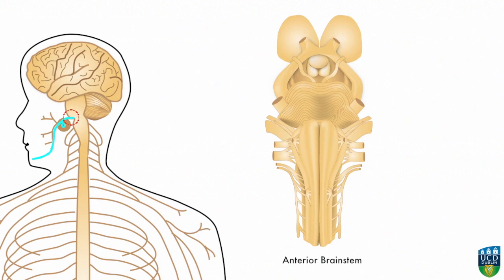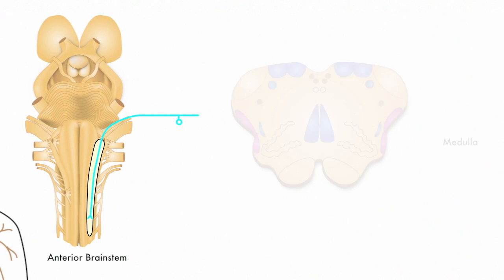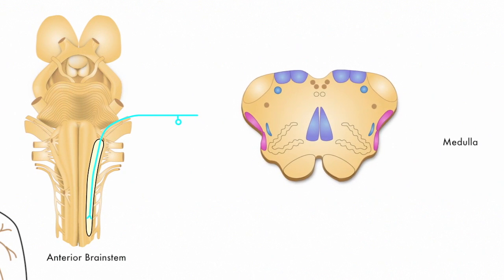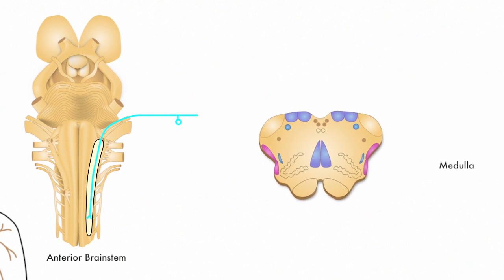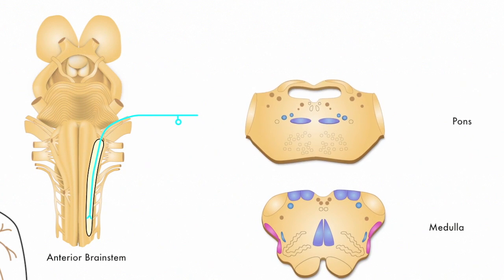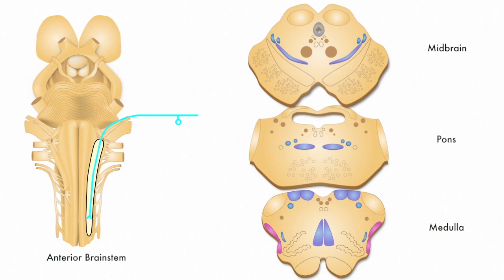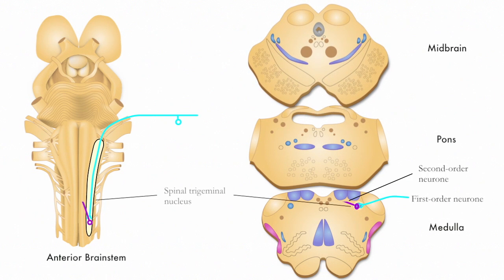The first order neuron carries the impulse into the brainstem and travels to the spinal trigeminal nucleus, where it synapses on second order neurons.